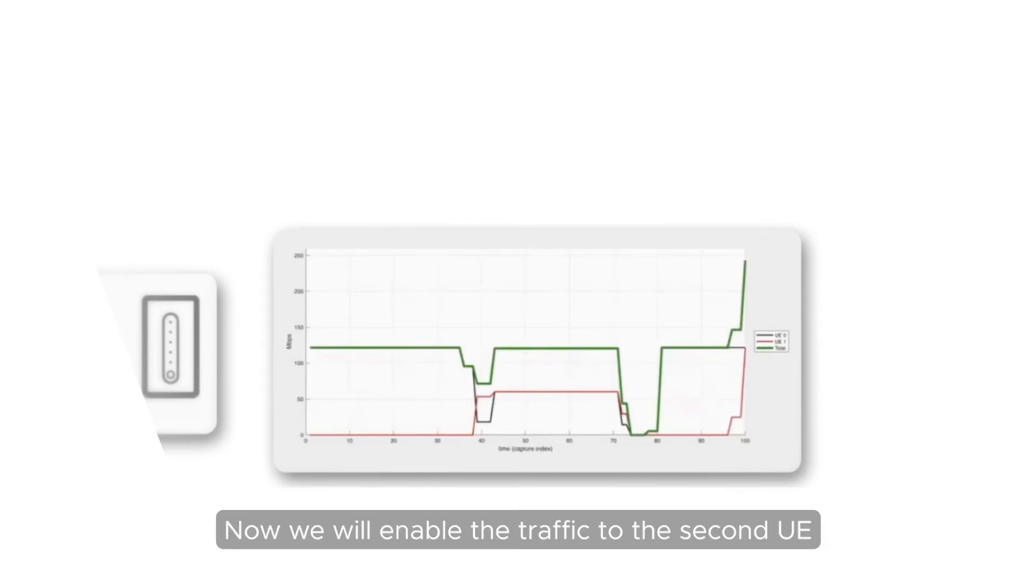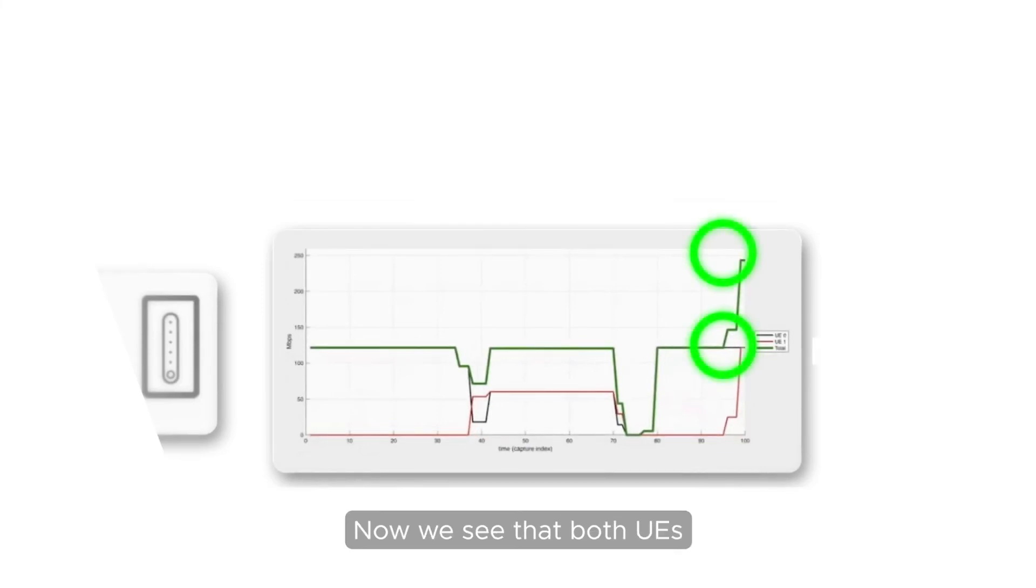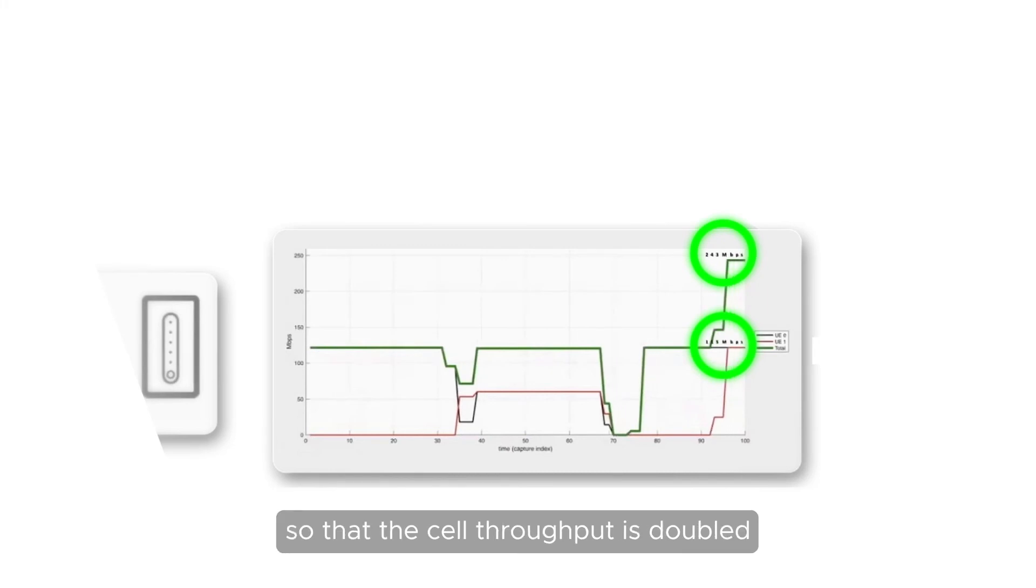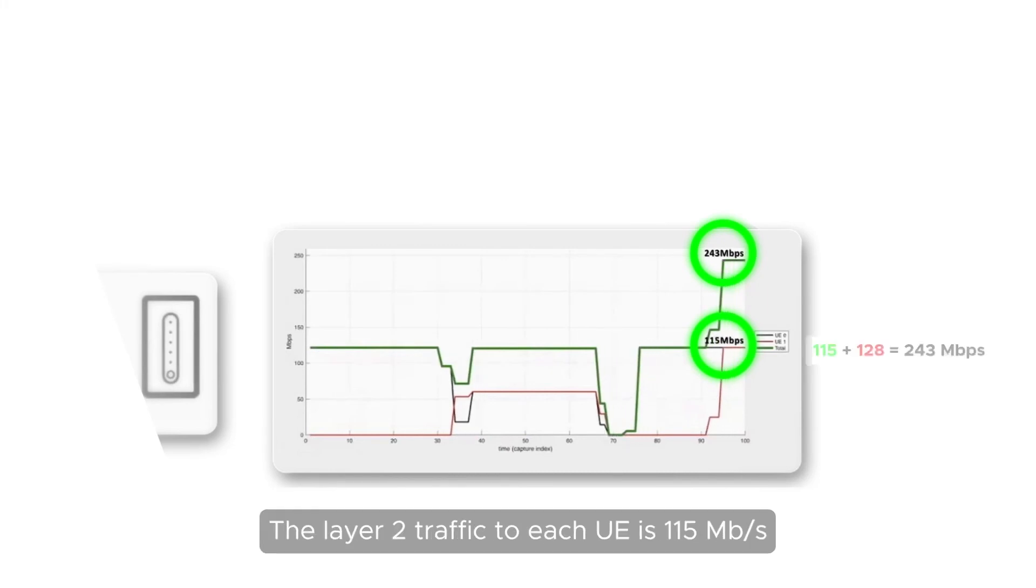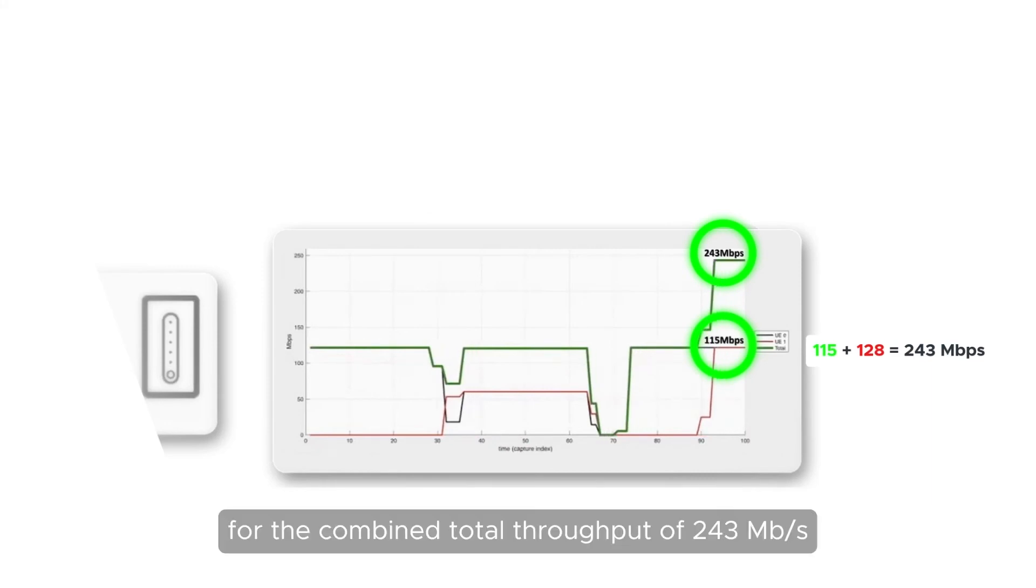Now, we will enable the traffic to the second UE so that the multi-user MIMO scheduler reuses the resources between the two UEs, and the coefficient computation continuously computes the pre-coder coefficients to maintain orthogonality between the beams. Now, we see that both UEs receive the full throughput, so that the cell throughput is doubled. The layer 2 traffic to each UE is 115 Mbps, for the combined total throughput of 243 Mbps.